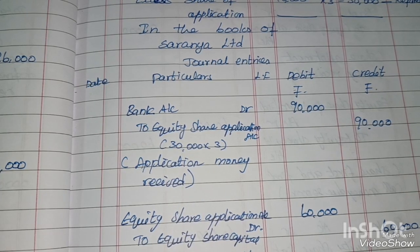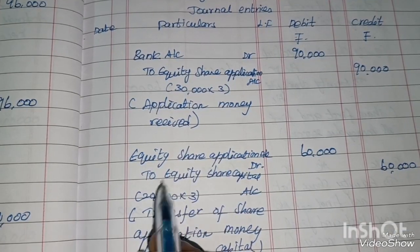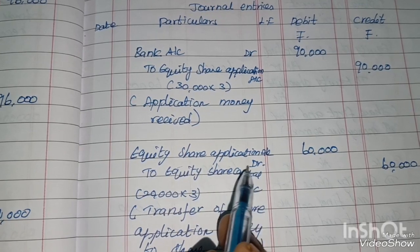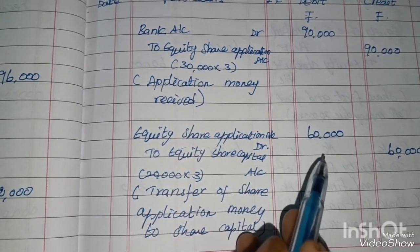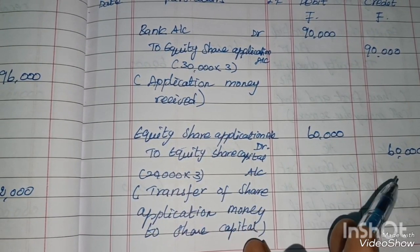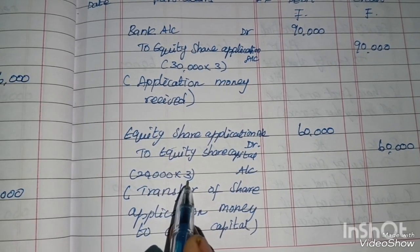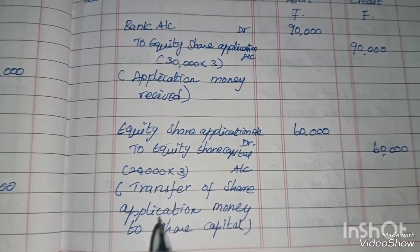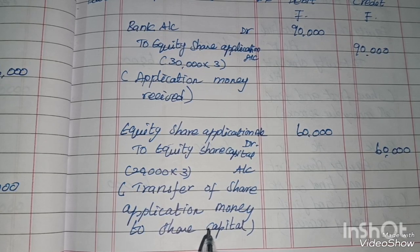Entry 2 – Application money transferred to share capital: Equity Share Application Account Dr. to Equity Share Capital Rs.60,000. (20,000 × Rs.3 = Rs.60,000) — Transfer of share application money to share capital.